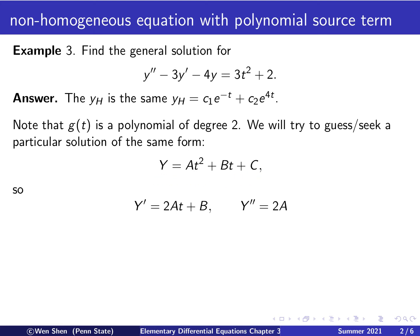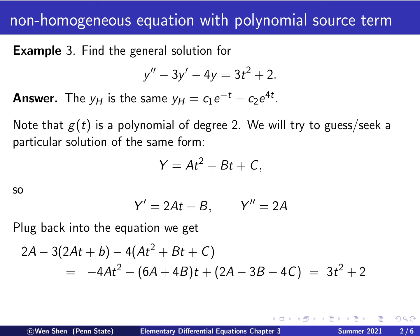Differentiating Y once with respect to t, I get 2At plus B. Differentiating one more time to get the second derivative, I get 2A. Now we are ready to plug into the equation. Y double prime is 2A, minus 3 times Y prime, minus 4 times Y. This gives us the left-hand side, which is a polynomial in t. Let's collect the like terms.